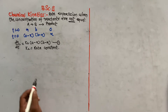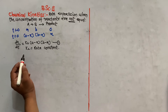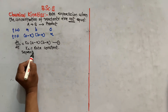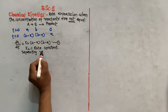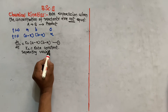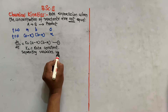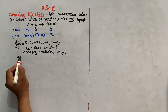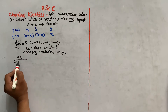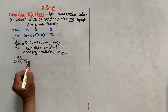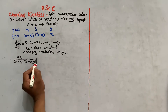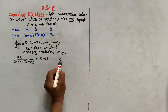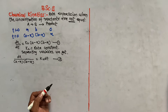Separating variables, we get dx / [(a - x)(b - x)] = K₂ dt, which we call equation number 2.